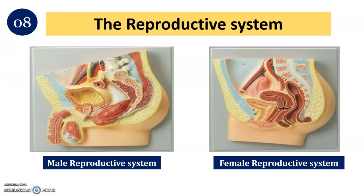Next is the reproductive system — both male and female. Both systems have internal and external organs. For the male reproductive system, the important organs are the testes (which produce hormones), the penis, the scrotum, and the prostate gland. For the female reproductive system, both internal and external parts are important. External parts include the clitoris, labia majora, and labia minora. Internal organs include the ovaries, uterus, and other structures.